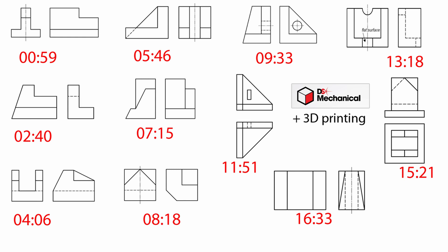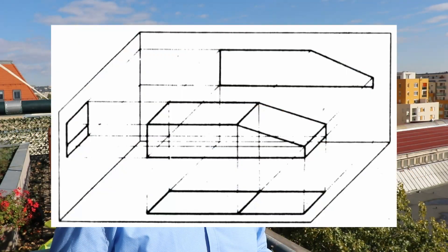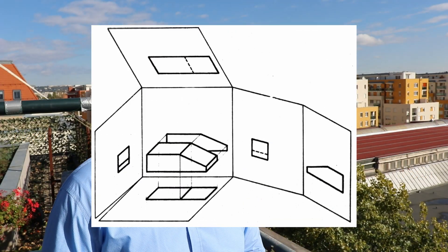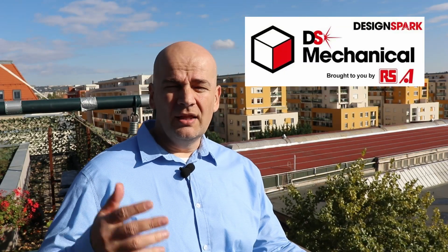These are orthographic views and these are axonometric projections. Don't be confused if you are from the US because this is the European order of the view. I'm using DesignSpark Mechanical — it is free software. Since the last few months I noticed that it requires registration, but it is still free. It has some limitations but those are mostly for CNC users.